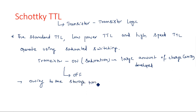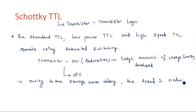Owing to the storage time delay, the speed is reduced. Because of this large amount of charge carriers developed in one state that cannot come back easily to the other state, it takes some amount of time — this is known as the storage time delay. Because of this storage time delay, the speed of operation of the normal transistor is reduced.